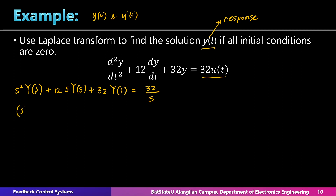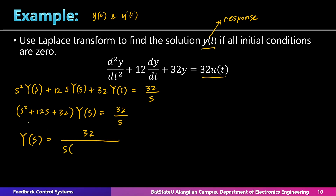The Laplace transform of 32 is 32/s. The next step is to combine all terms containing Y(s). So we have (s² + 12s + 32)·Y(s) = 32/s. Now we can get the expression for Y(s). This quadratic can be factored — the factors of 32 that give a sum of 12 are 4 and 8. So the denominator becomes s(s + 4)(s + 8).